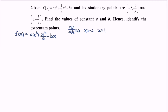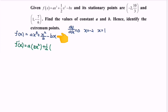What we have to do now is differentiate f(x). So f prime of x is equal to a — focusing on x cubed, we get three x squared — plus one over two, focusing on x squared, we get two x, minus b, focusing on x we get one.